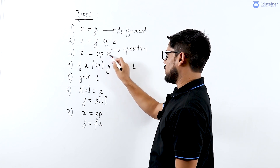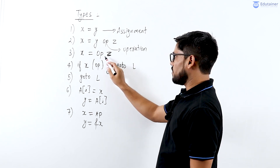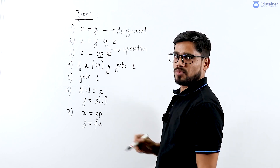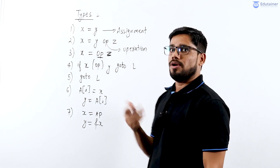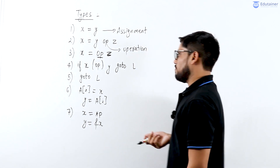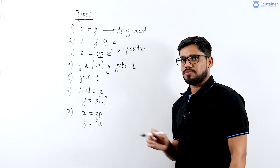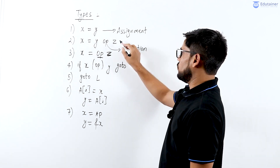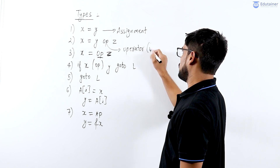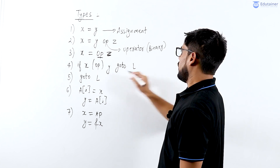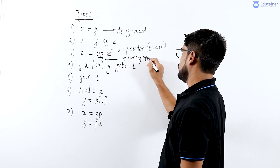The third operation is the unary operation. Here z is a variable and on this variable we apply a unary operator — it might be increment, decrement, or any other unary operator — and finally we assign this result to the variable x on the left hand side. So the first operator here is binary and the second is a unary operator.